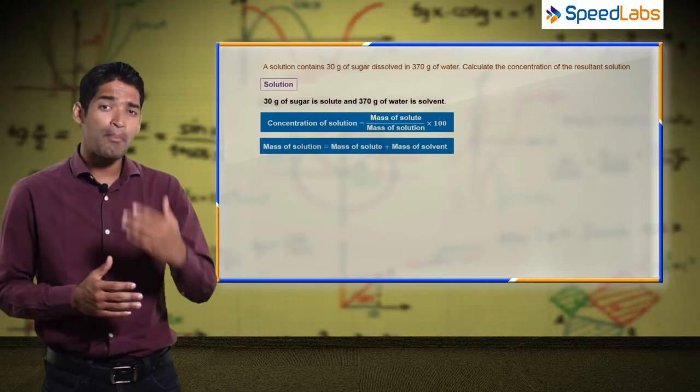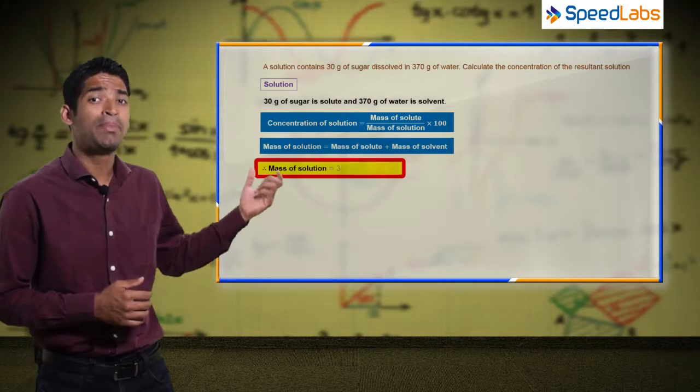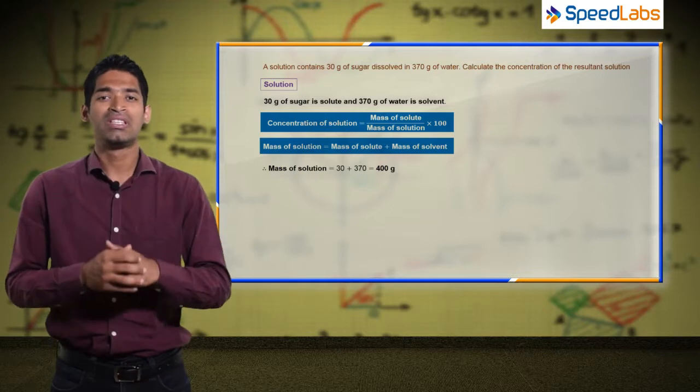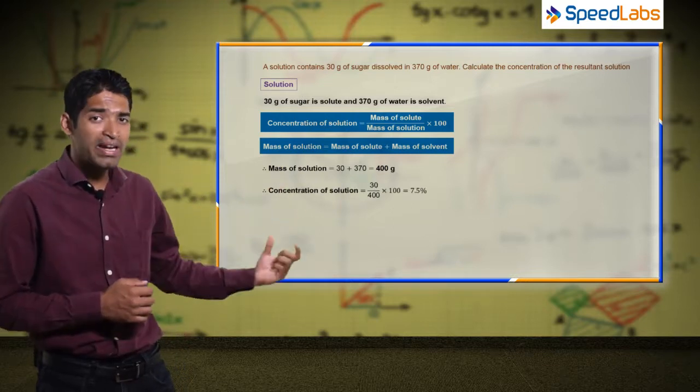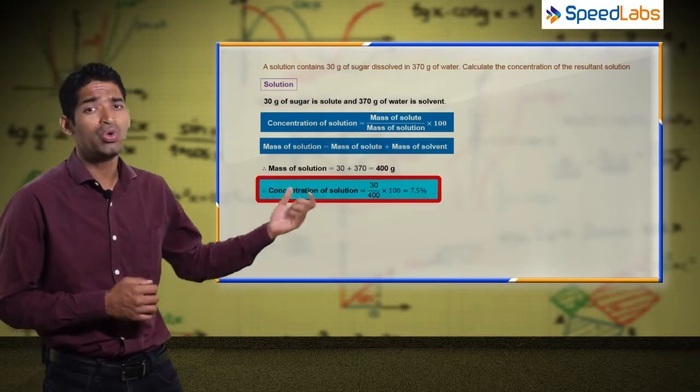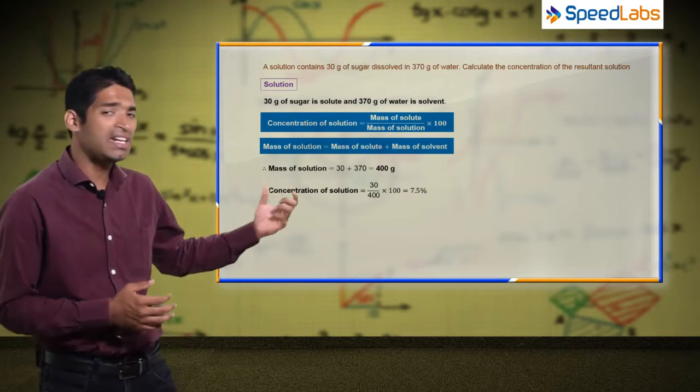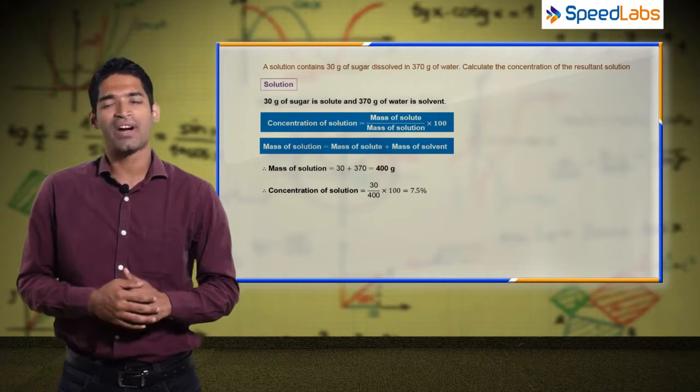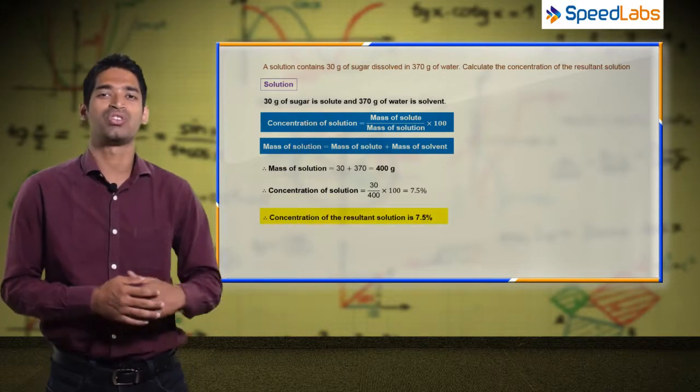So mass of solution will be 30 plus 370, that is equivalent to 400 grams. So the concentration of this solution will be 30 divided by 400 into 100. On simplification this gives 7.5 percent, and this is the resultant concentration of the solution.